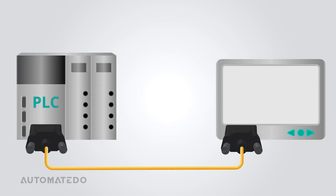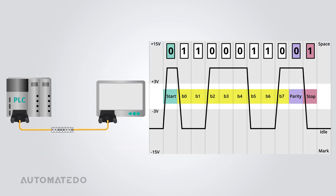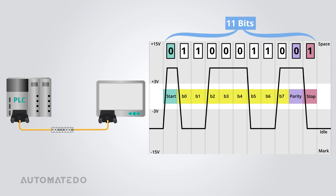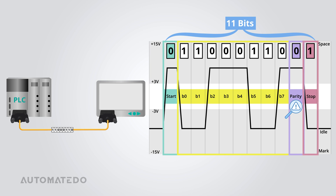In RS-232 communication, data is transmitted through a wire as a signal — a sequence of voltage levels that encode the data, with voltage levels being positive or negative relative to a zero-volt reference. RS-232 transmits a binary zero using positive voltage, historically known as spacing corresponding to logic zero. A binary one is sent using negative voltage, called marking corresponding to logic one. A standard RS-232 frame comprises 11 bits: a zero-valued start bit, followed by eight data bits, a parity bit for error detection, and ending with a one-valued stop bit.